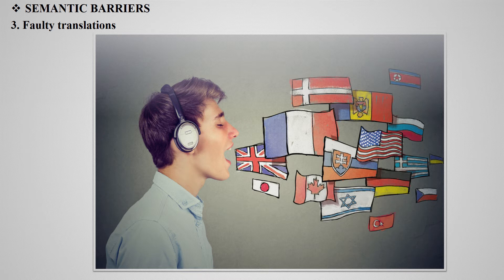The next barrier is faulty translation. Sometimes communication originally drafted in one language, for example English, needs to be translated into an understandable language for workers. If the translator is not expert in both languages, it may cause different meanings.